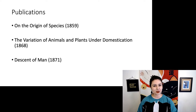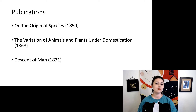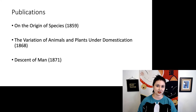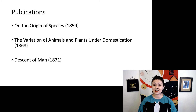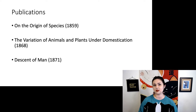What Darwin is doing here is he is using artificial selection, which people already understood pretty well at this time, as a vehicle with which to understand natural selection. We've been domesticating plants and animals, and we can see really big differences between domesticated things and the wild versions. So let's look at some examples.